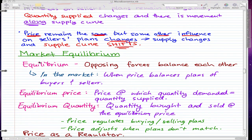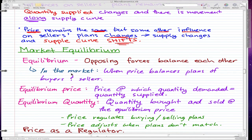Now equilibrium, the definition we should all know, the general definition is pretty much opposing forces that balance each other. So we have two forces that cancel each other out. Now in the market, equilibrium means there is a price that balances the plans of both buyers and sellers. That's the definition of equilibrium in the market.